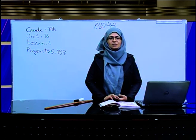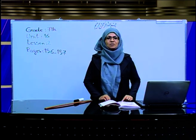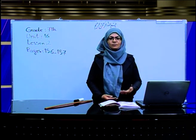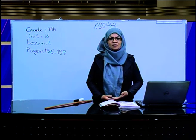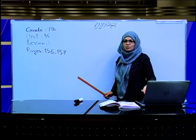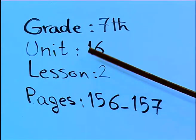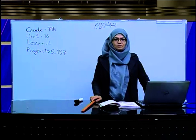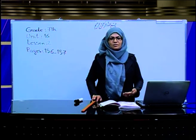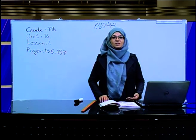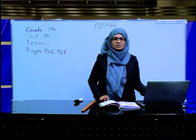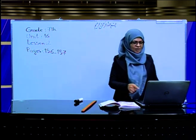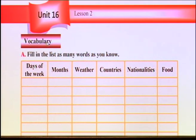As you know, we have started the last unit of our book, and today we are going to continue the last unit. We will have two more pages from this unit. This unit is a review, and we will review the previous points we studied in the previous units. We are in Unit 16, Lesson 2, and we have two pages: 156 and 157. In these two pages we will remember the vocabulary from previous lessons, do some exercises, and then have an interesting reading. Open your books and see the first page — vocabulary.